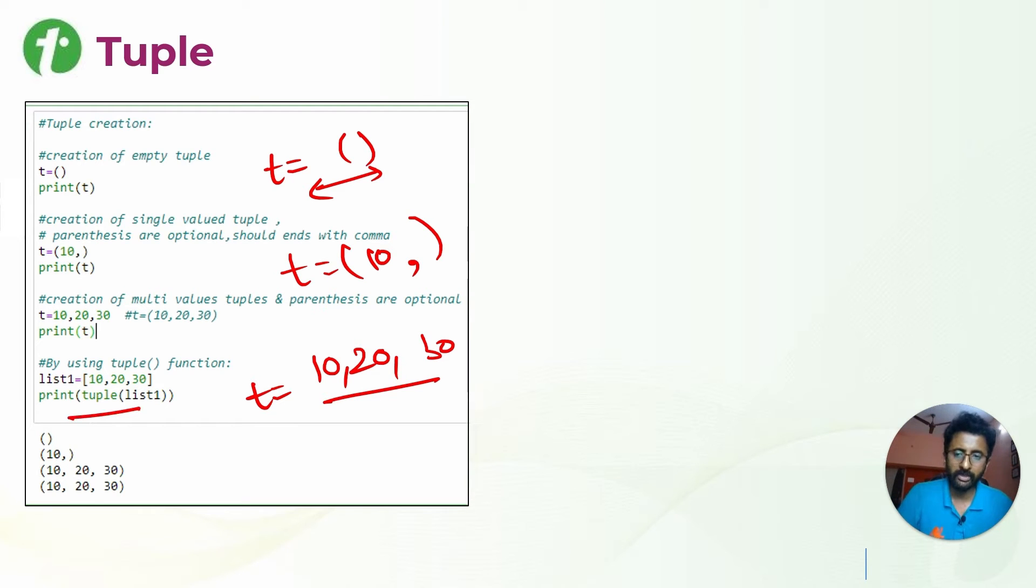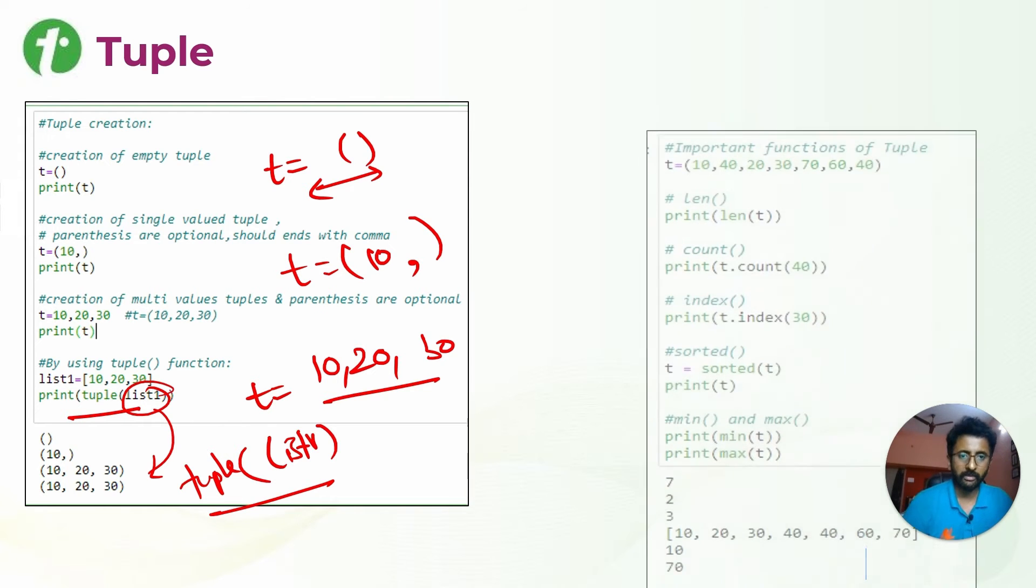We have also seen type casting, how we have converted a list or a string to list by using the split method. Similarly, we can convert a list to tuple by using the tuple method on the list. So it will be converting to tuple. These are the ways to define the tuple.